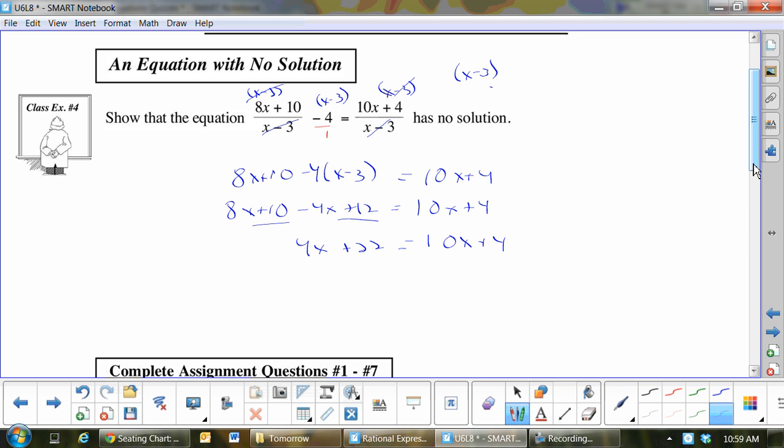Now it doesn't matter, I like my variables on the left. So I'm going to minus 10x here, minus 10x. That gives me negative 6x. And then I want to get the number out of here. That's minus 22, minus 22. 4 minus 22 is negative 18. Divided by negative 6, divided by negative 6. x equals 3. What are the non-permissibles? x cannot equal 3. Therefore, reject. And in this case we would say no solution.